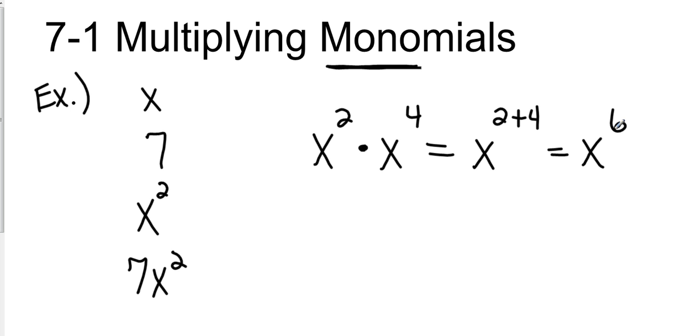Same thing if I change the variable up and I went a to the third times a squared times a. That's going to be a to the 3 plus 2 plus 1. Remember there's an imaginary 1 there. And so that's going to be a to the sixth power. And so that's the very basics of multiplying monomials.